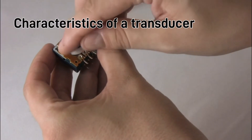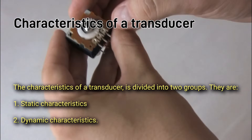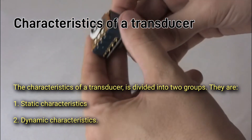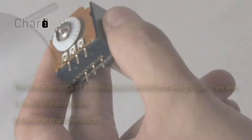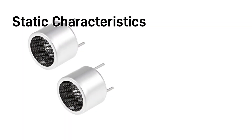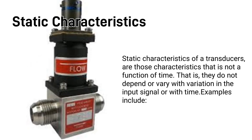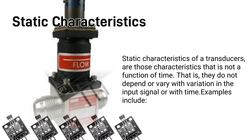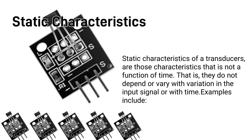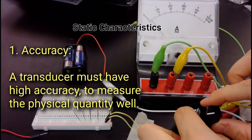The characteristics of a transducer are divided into two groups: static characteristics and dynamic characteristics. Static characteristics are those that are not a function of time — they do not depend on or vary with variation in the input signal or with time.